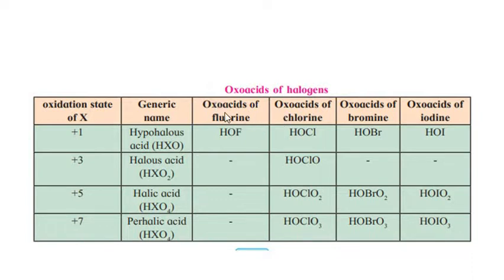Fluorine, chlorine, bromine, and iodine each form oxoacids. Fluorine forms only one oxoacid — hypofluorous acid — because fluorine shows only one oxidation state in its compounds, which is −1.